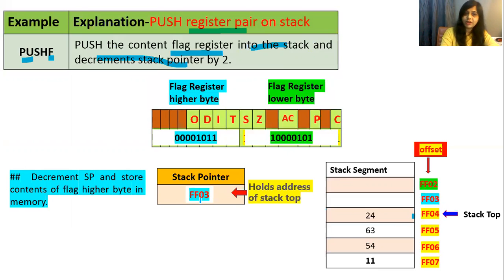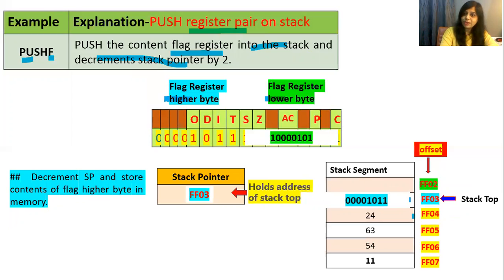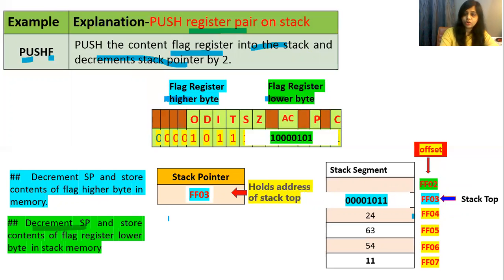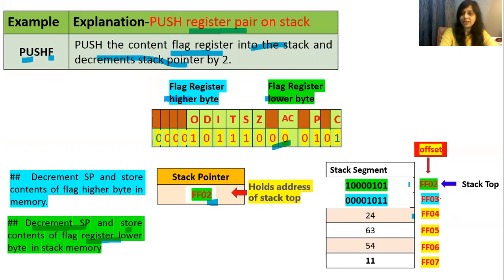The instruction will decrement the stack pointer by 1 to FF03, then transfer the higher byte of the flag register into that memory location. Memory is now filled till FF03, so the stack top changes to FF03. Then again it will decrement the stack pointer to FF02 and store the contents of the flag lower byte into FF02. Now the stack pointer holds FF02 as it always holds the address of the stack top.